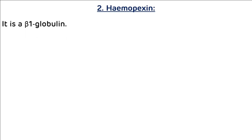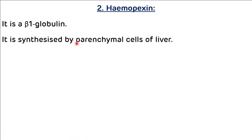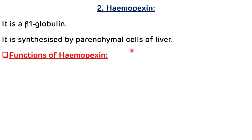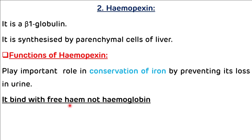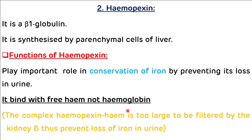The second beta globulin is hemopexin. It is a beta-1 globulin synthesized by the parenchymal cells of the liver. Hemopexin plays an important role in the conservation of iron by preventing its loss in the urine. It binds with free heme — not hemoglobin — to form a complex that is too large to be filtered by the kidney, thus preventing iron loss in the urine. Remember: hemopexin binds free heme, not hemoglobin.